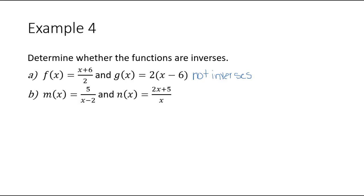For part b, we have the function m of x is equal to 5 over x minus 2, and n of x is equal to 2x plus 5 divided by x. The first thing we are going to do is find what m of n of x is equal to.